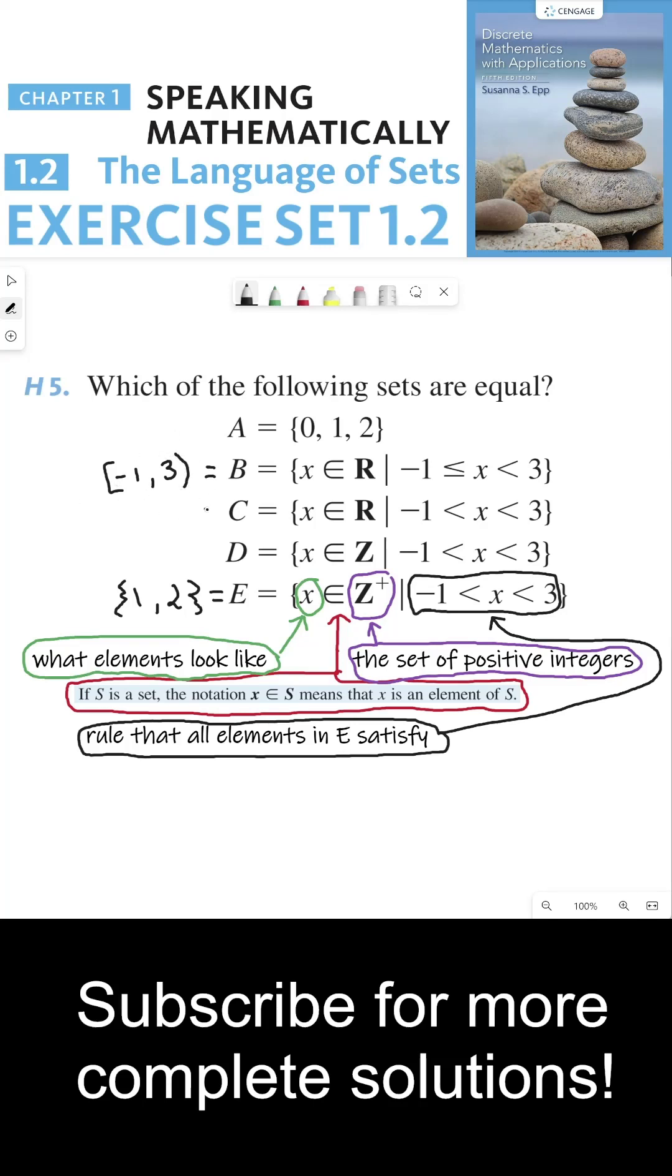C is very similar to B. However, this is from negative 1, 3, where there's parentheses around the negative 1. We don't include negative 1 for C.